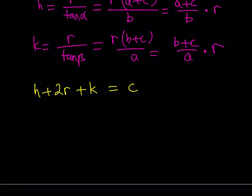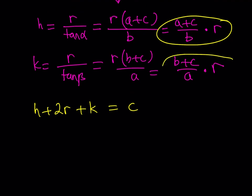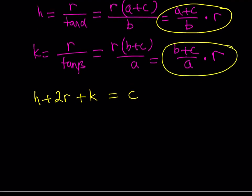Now, I can replace h with this, and I can replace k with this. Let's do it. So, this is going to give me a plus c over b multiplied by r, and then I'll have 2 times r plus k, which is b plus c over a times r, and the sum is going to equal c. Awesome.